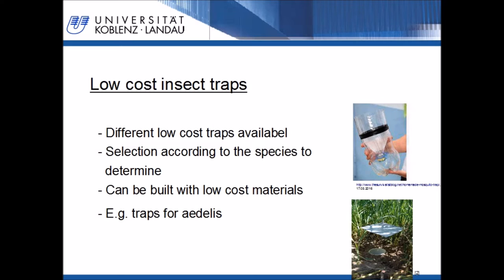First of all, traps are needed to catch the insects. As mentioned before, such traps must be constructed of low-cost material, available also in developing countries. There are different easily buildable traps available. The type of trap is related to the insect which should be caught. For example, for ground-living insects, it is possible to build a so-called pitfall trap, built from materials available nearly everywhere, like an empty yogurt cap and sugar as lure. A trap for day-active mosquitoes can be built with an empty plastic bottle, duct tape and yeast. Such traps are low-cost but are also used in professional science. Easy-readable manuals describing how to build such traps are also available.